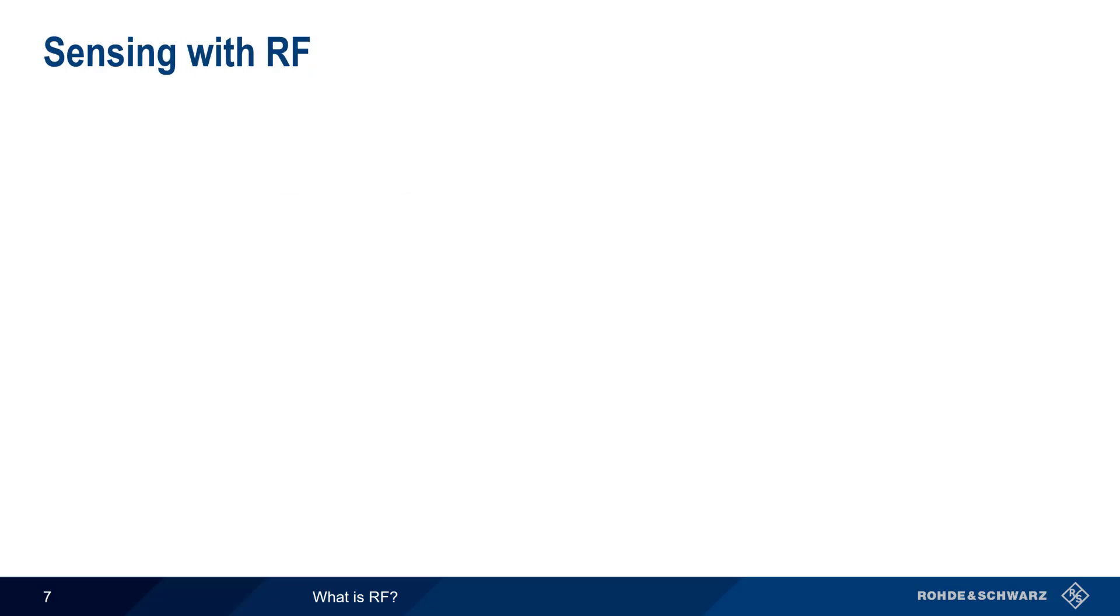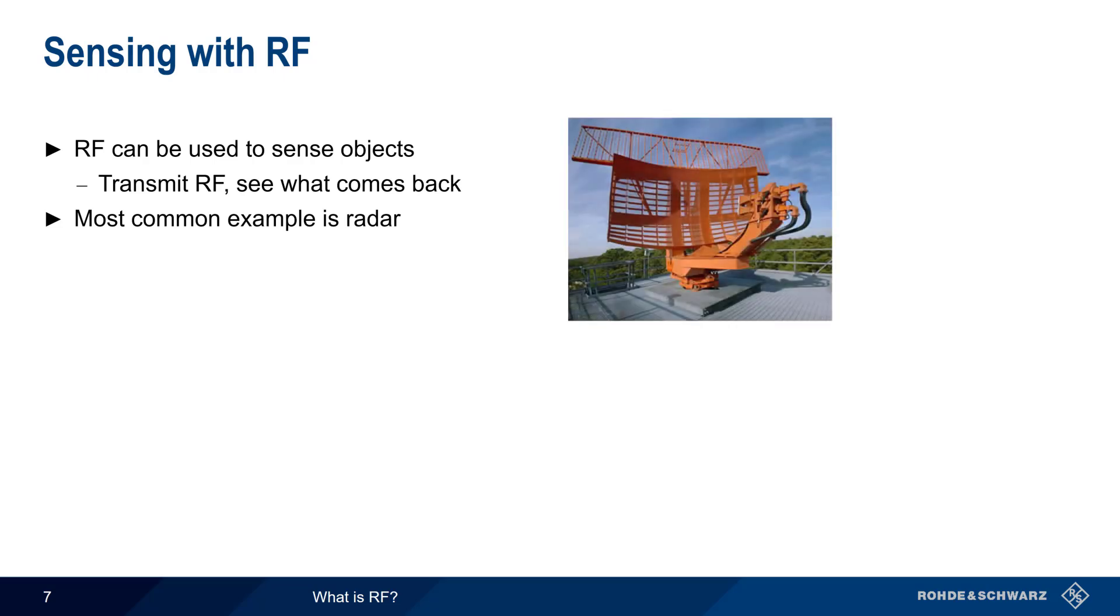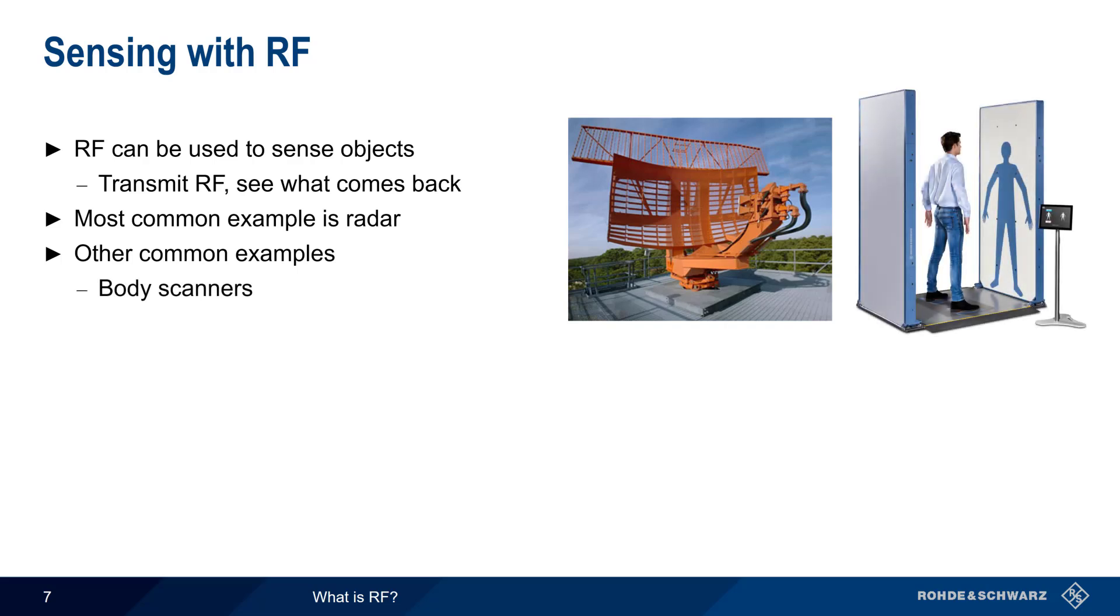Radar is, however, an excellent example of how objects can be sensed using RF. We transmit RF and examine what comes back. Most people are familiar with various radar applications, such as detecting planes or ships, or measuring the speed of a vehicle or a baseball. One of the more common examples of using RF for sensing are the body scanners that have largely replaced metal detectors in airports.